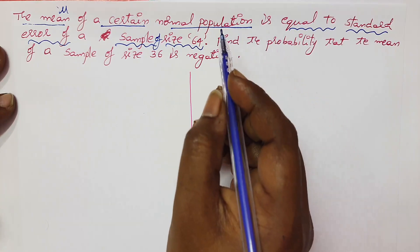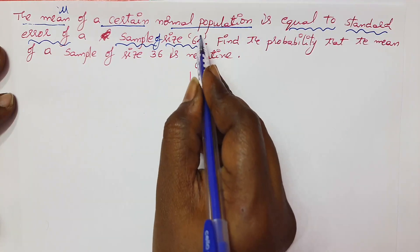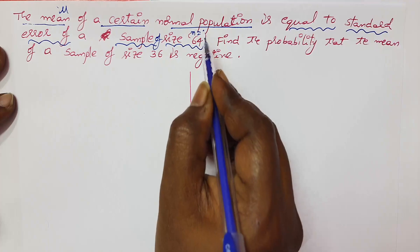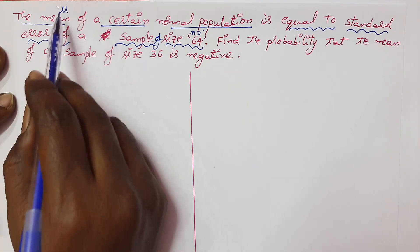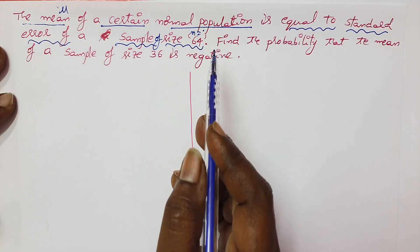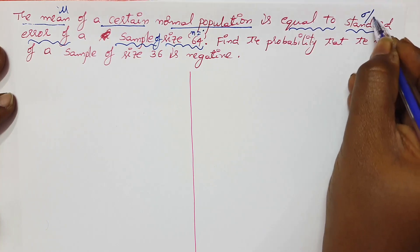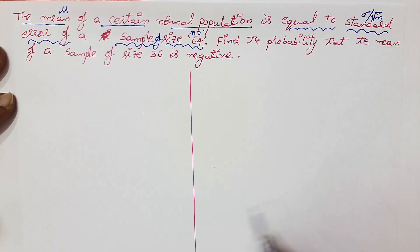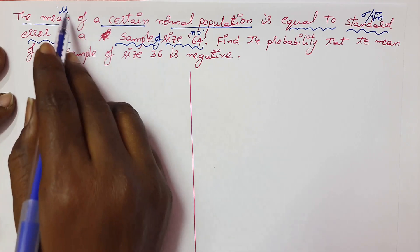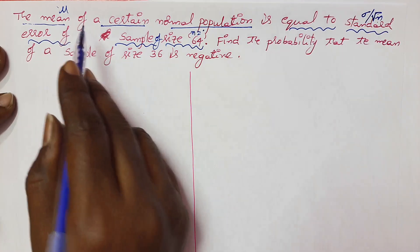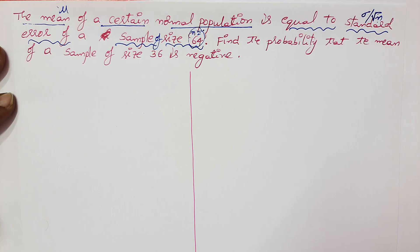So it means that when sample size n equals 64, what happened? Mean and standard error are both equal. What is the standard error in sampling? Sigma by root n. So mu and sigma by root n are equal when n equals 64.